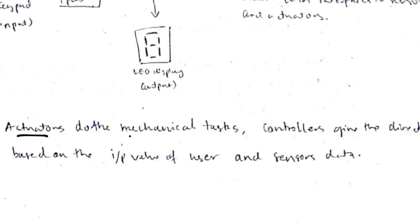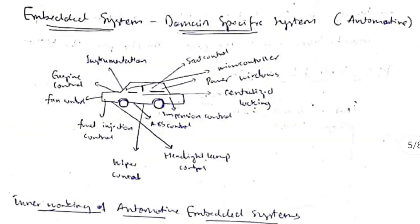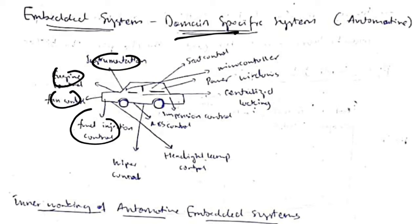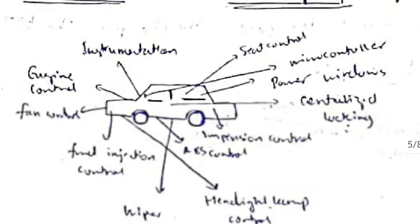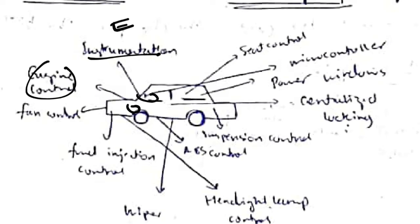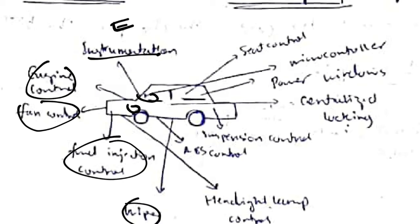Actuators perform the mechanical task, controllers give directions based on user input and sensor data. The next type is domain specific — this means many applications are embedded in a single system. An example is a car: it includes instrumentation, engine control, fan control, fuel injection control, wiper control, and anti-brake locking systems, among many others.